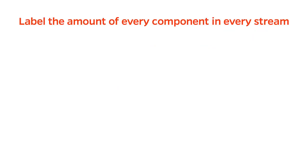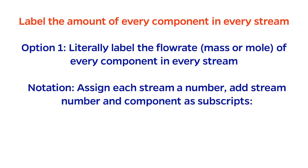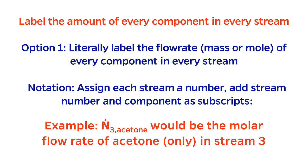Going back to the requirement that we label every stream with the amount of every component in that stream, one option is to take this literally. If there are multiple components in a stream, as is usually the case, we label the flow rates separately. The convention we use in MEB is to assign each stream a number, and the flow rate is given subscripts for the stream number and the species. For example, N3 acetone would mean the molar flow rate of acetone in stream 3.